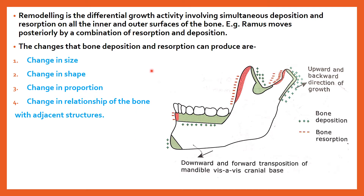Remodeling is the differential growth activity involving simultaneous deposition and resorption on all inner and outer surfaces of the bone. In the diagram showing the mandible, the negative sign represents resorption and positive represents deposition. The ramus moves posteriorly by a combination of resorption and deposition, so it moves from one position to a new position — this is relocation, which is remodeling.